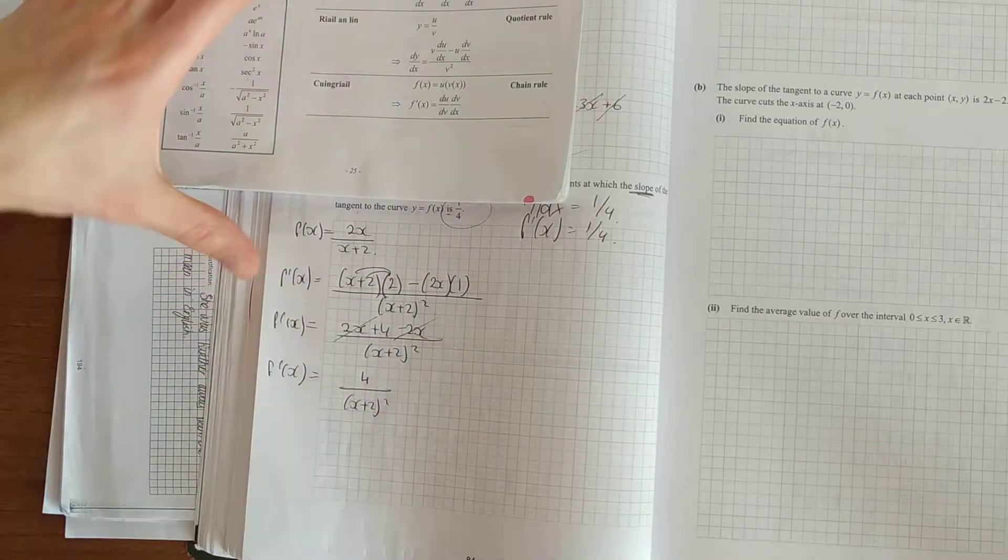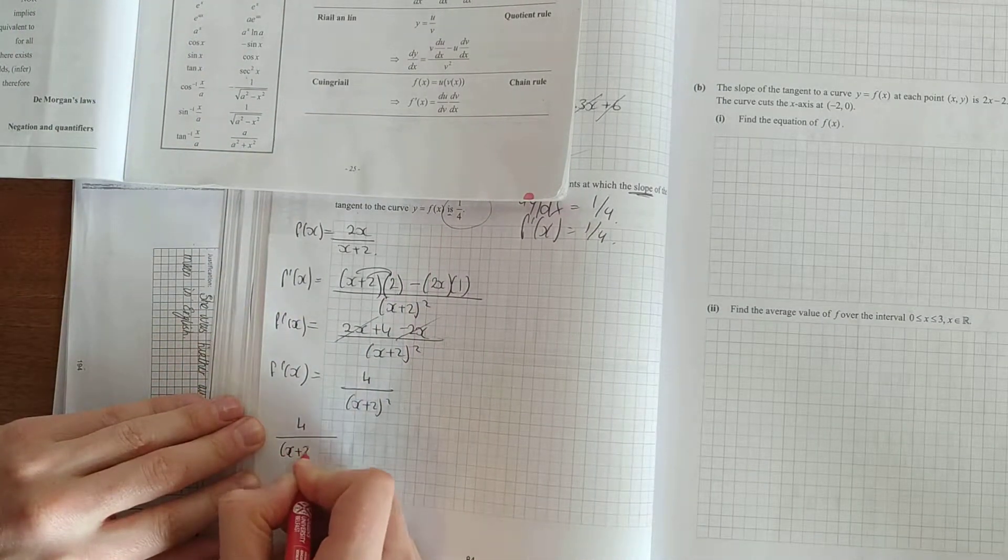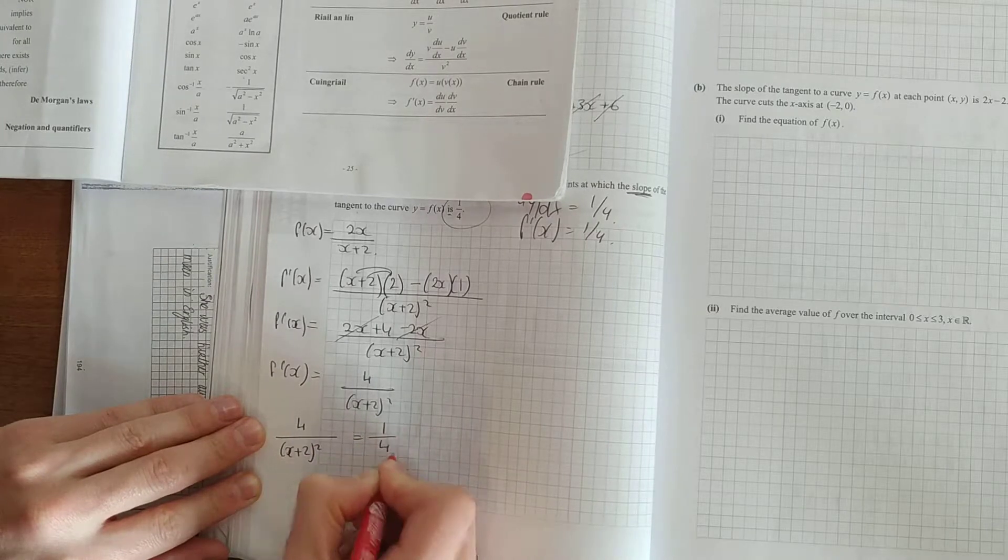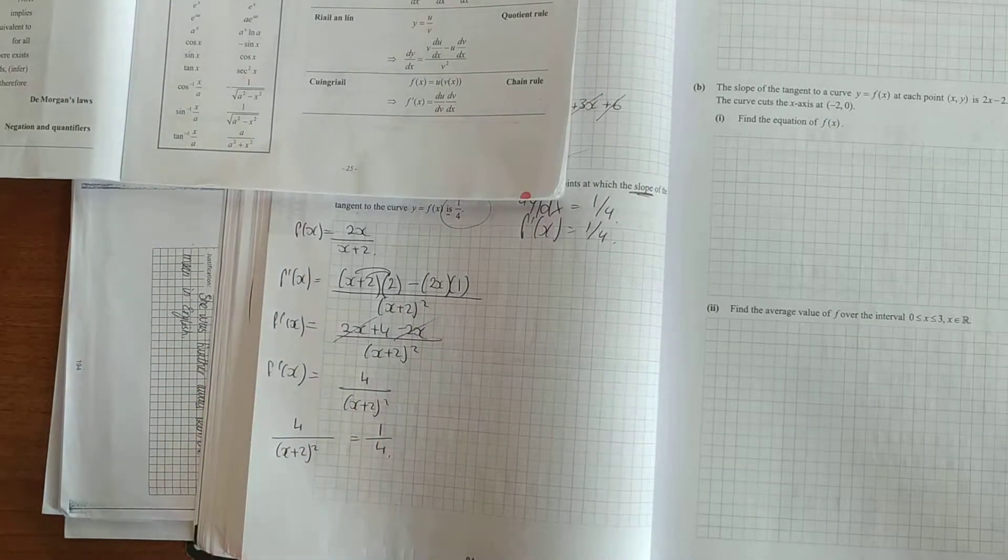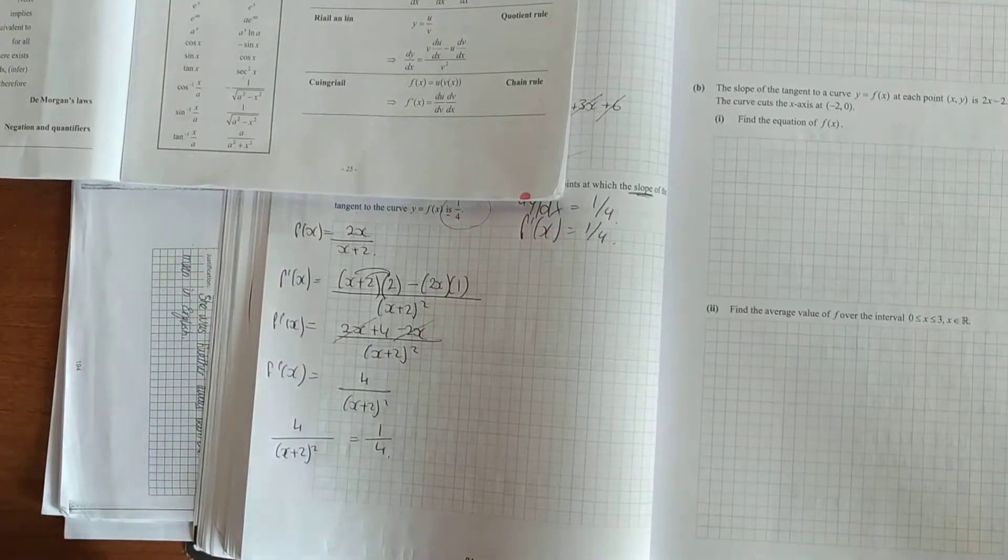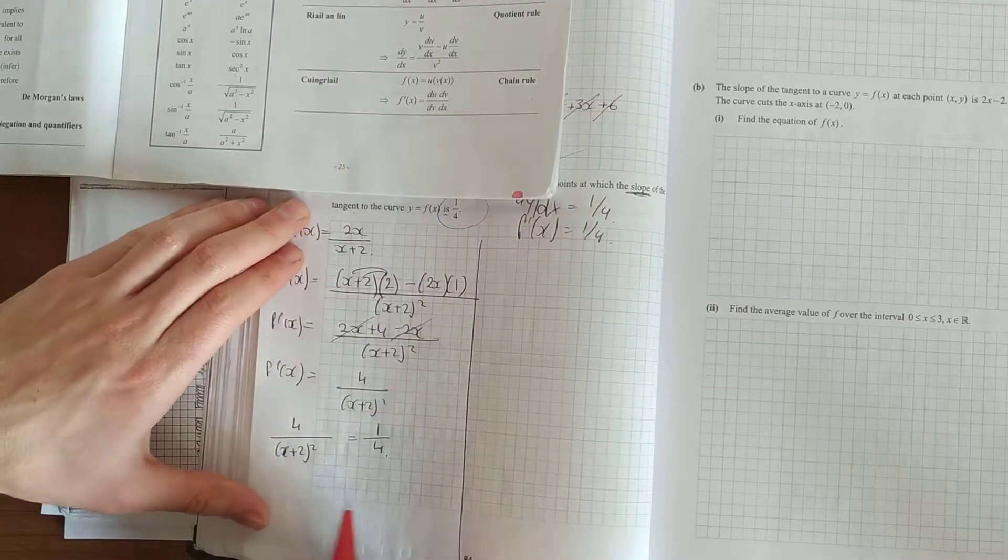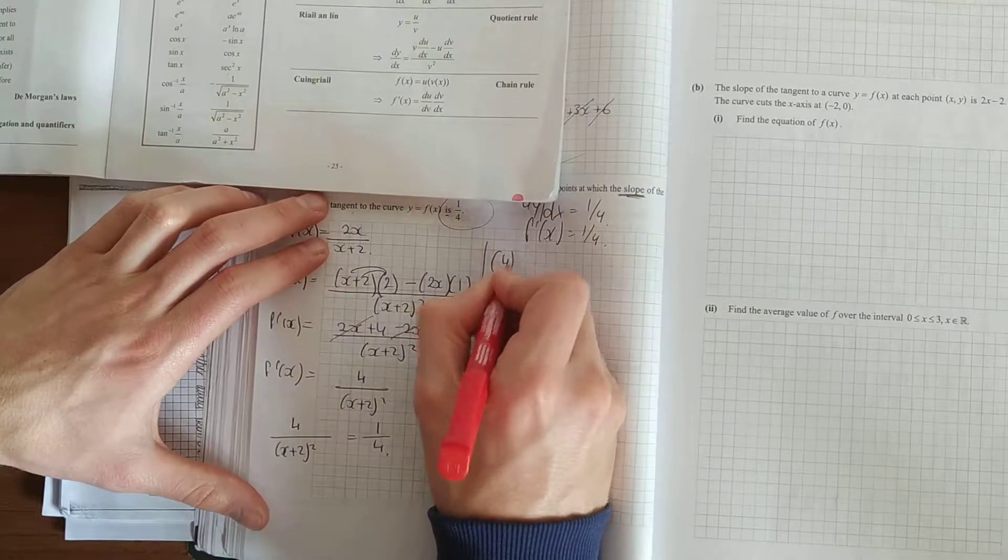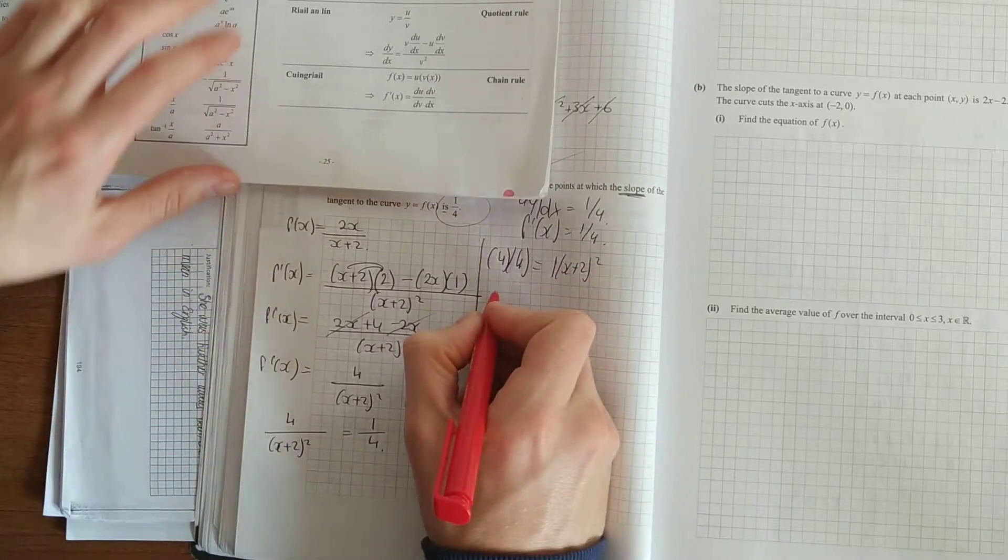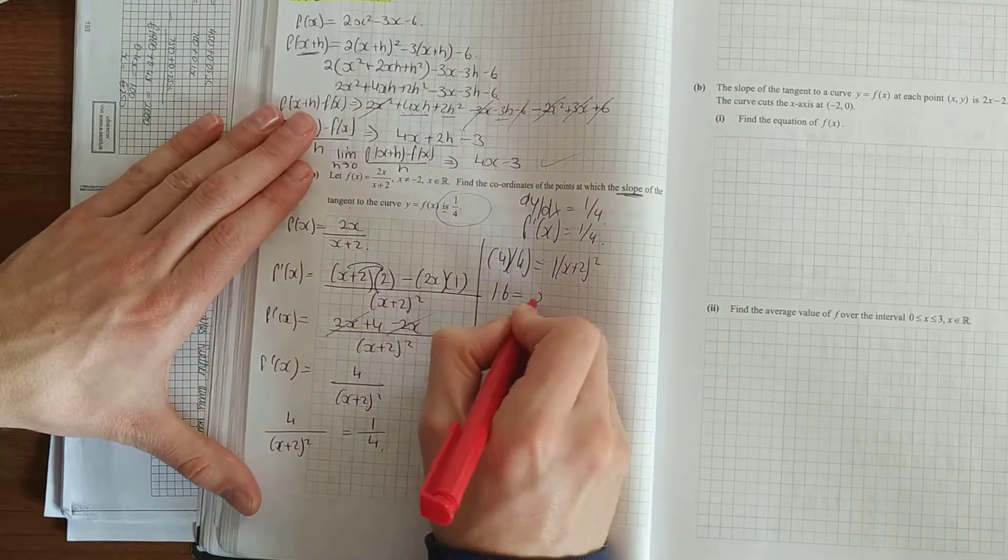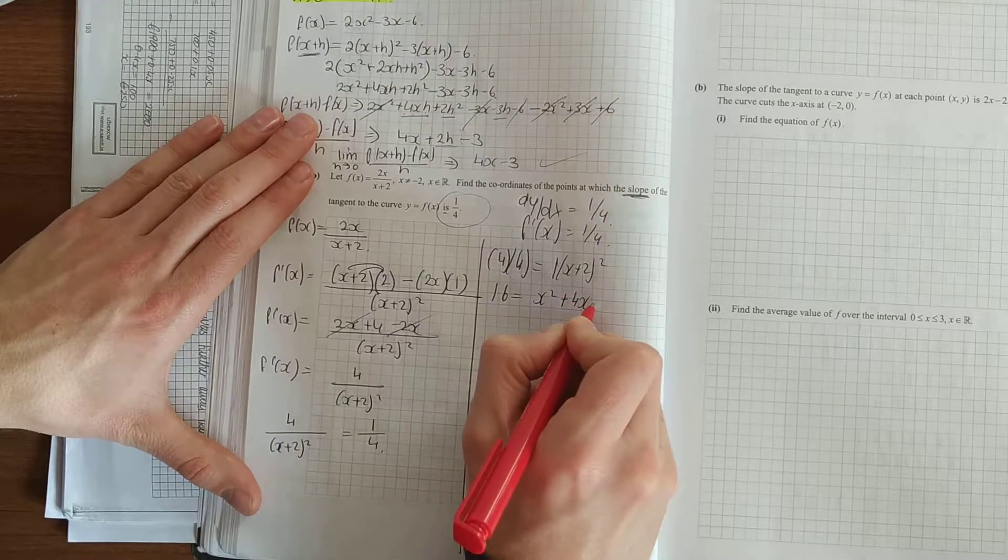Now they say the slope is a quarter. So what we do with that is equal to a quarter. And again. Once we have a fraction and we have an equals. Now we can make things disappear here. So cross multiply. 4 times 4 squared. 16 is equal to x². Multiply the 2 together. Plus 2x. And double it. Plus 4.